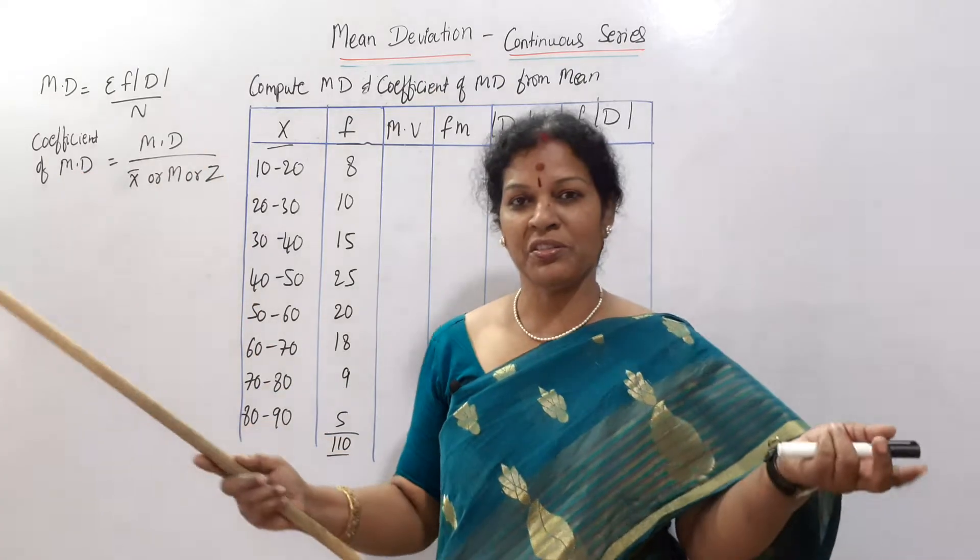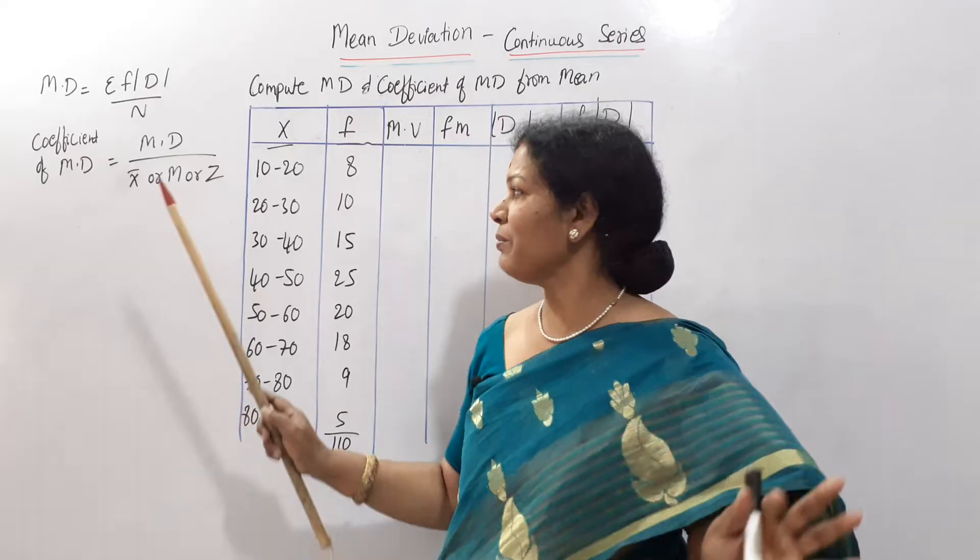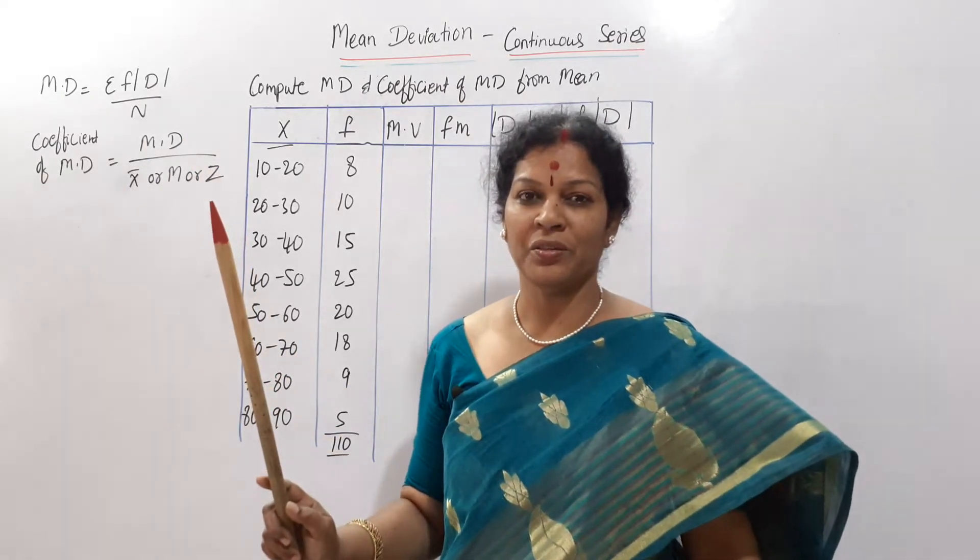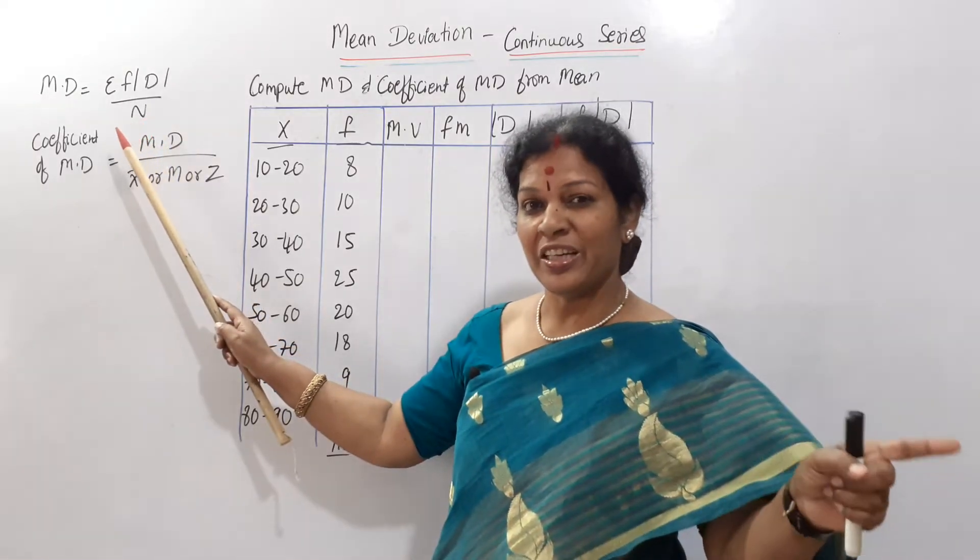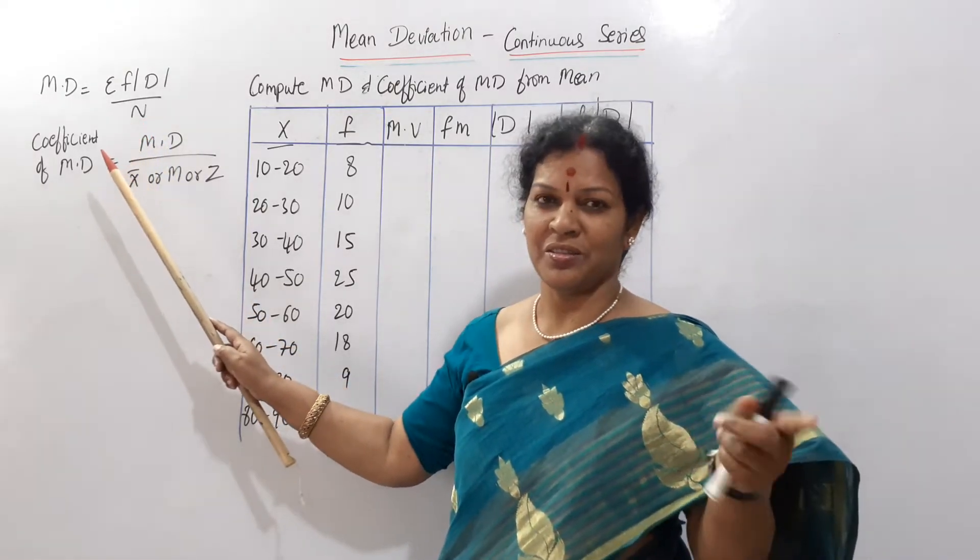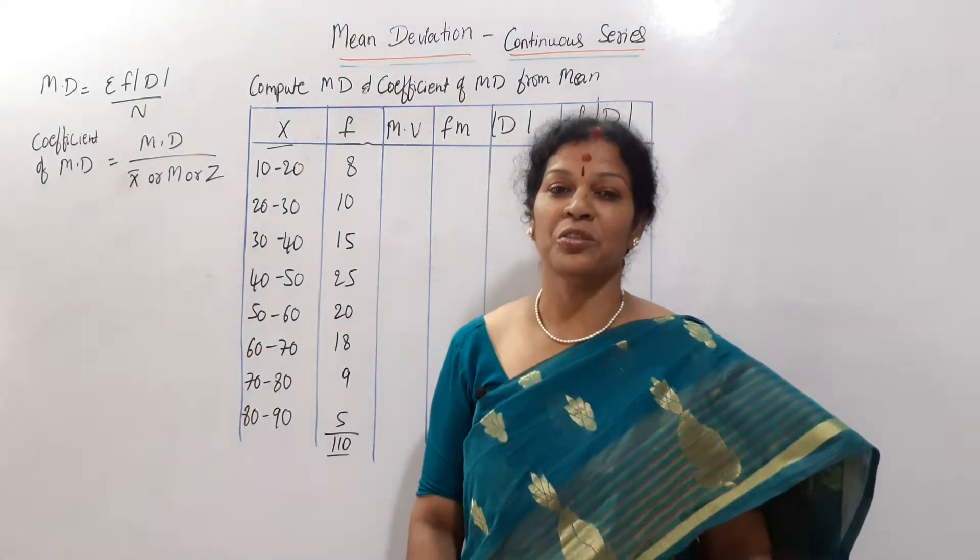Coefficient of mean deviation is as usual for individual, discrete, continuous series. For everything, it is the same formula, coefficient of mean deviation. Only there is a change in individual to discrete. Whatever discrete we have written, same formula for continuous also.